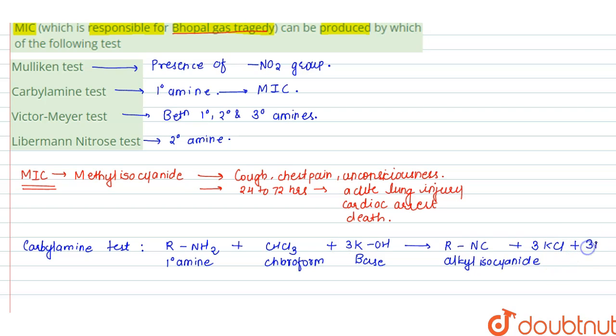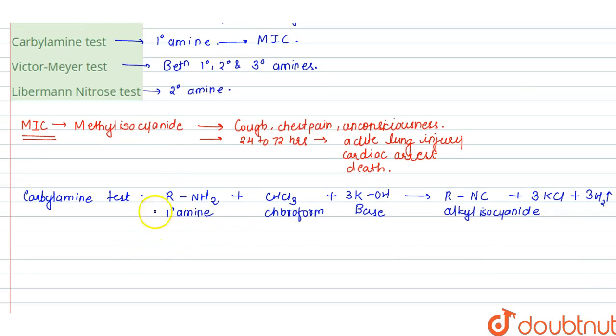Now here, if we use primary amine as methyl amine, that is CH3-NH2, with chloroform and KOH, then this gives you CH3-NC, which is methyl isocyanide.